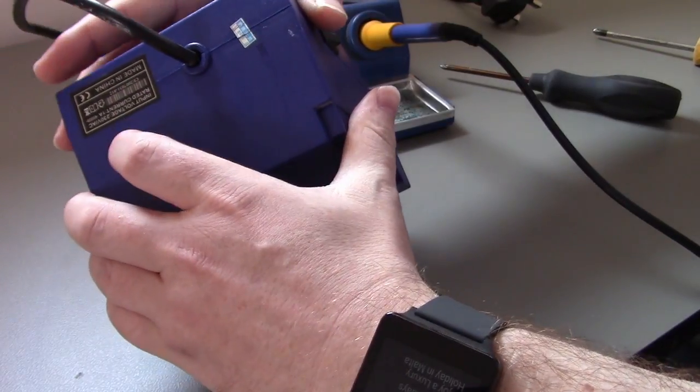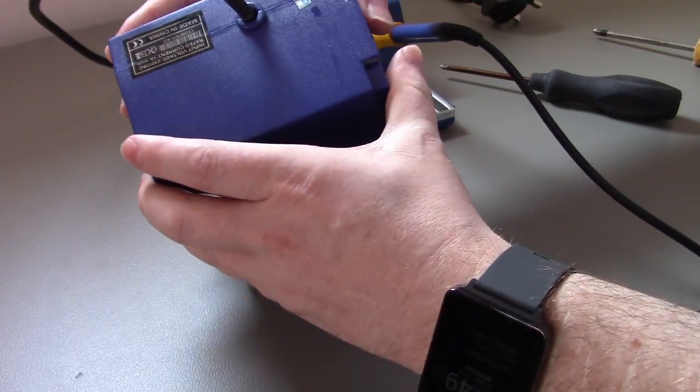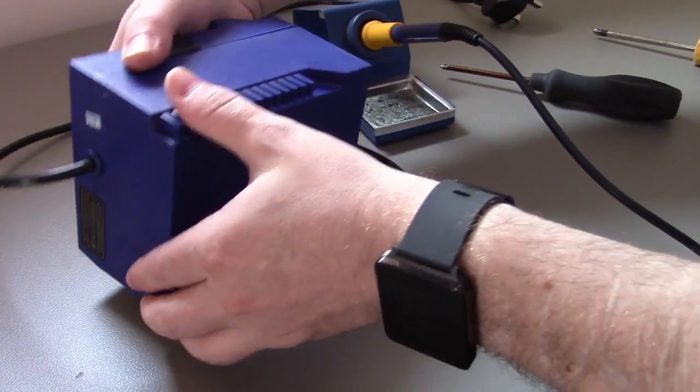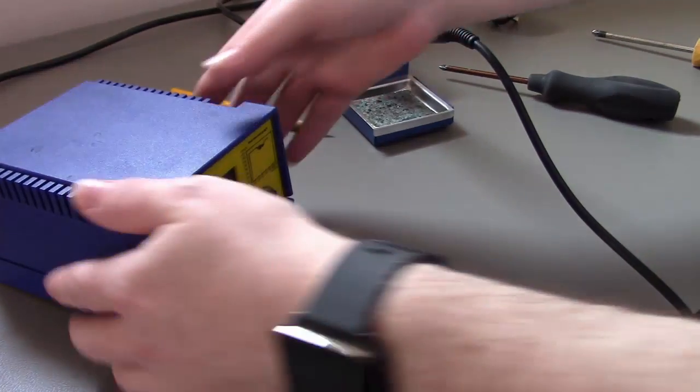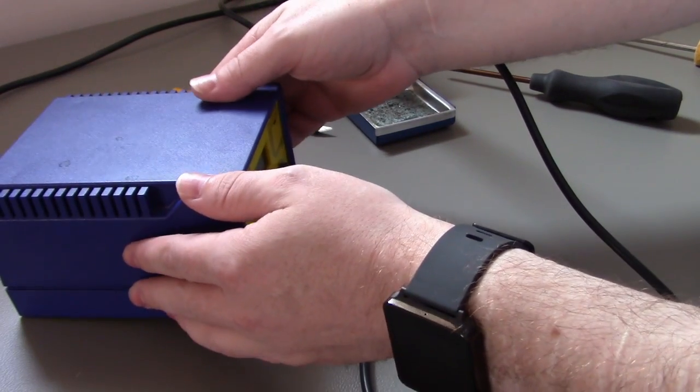It has got a sticker across the back here, so I'll have to get a sharp knife and just cut through that. Okay, I've cut through that sticker now, so let's lift the lid and see what we've got inside.